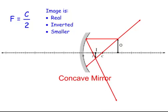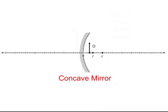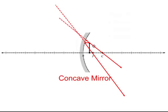Now for a concave mirror with the object in front of the focal point — if we're at the focal length, we get no image whatsoever. Inside the focal point, one ray goes parallel and reflects through the focal point, and the next goes through the center and reflects back 90 degrees. These don't meet on the right-hand side, so we draw dotted lines — the image meets up on the left-hand side. It is virtual, upright, and larger. Check a concave mirror in a spoon to see exactly what this means.